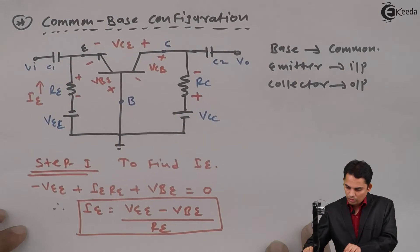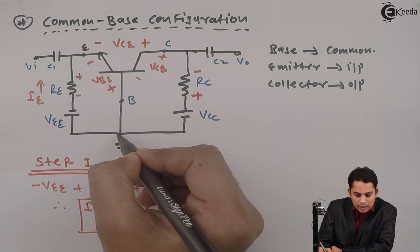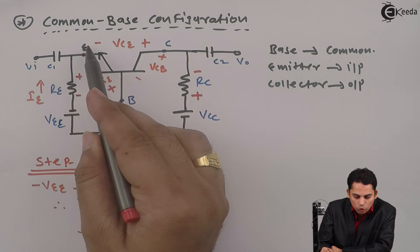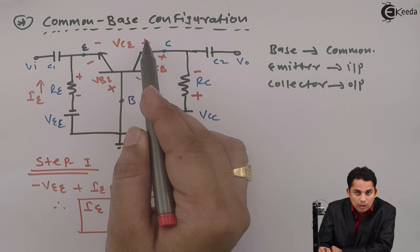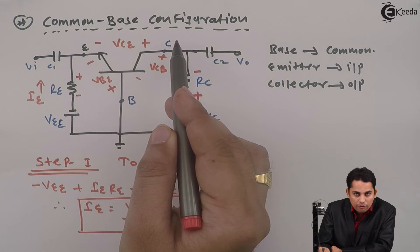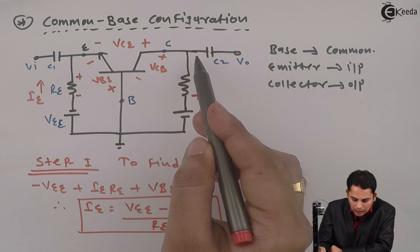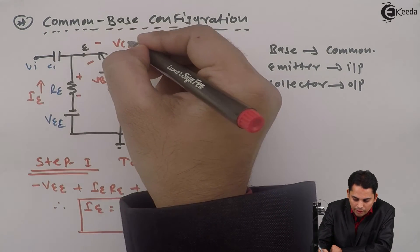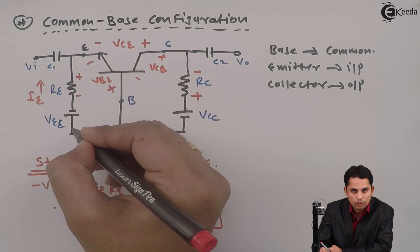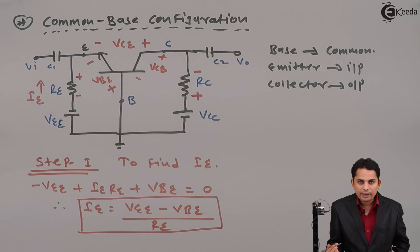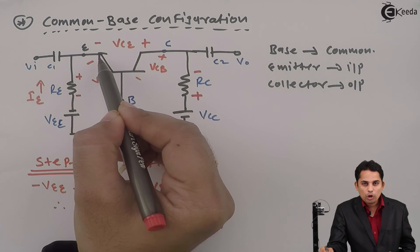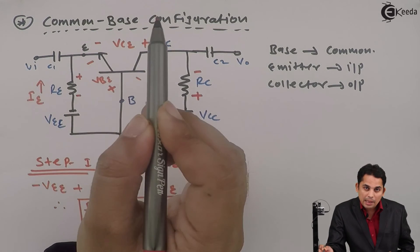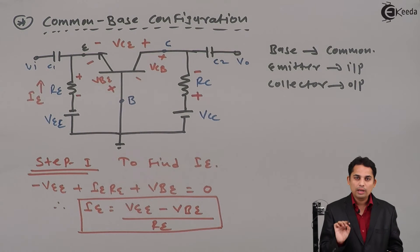In step two, we apply KVL to the entire network. The entire circuit means we start from one point, go to the emitter, follow the path through to the collector, accounting for the voltage across collector to emitter, the resistor at the collector, the DC source, and return to the starting position. By applying this, we get the voltage between collector to emitter, since this collector-to-emitter voltage is between input and output.